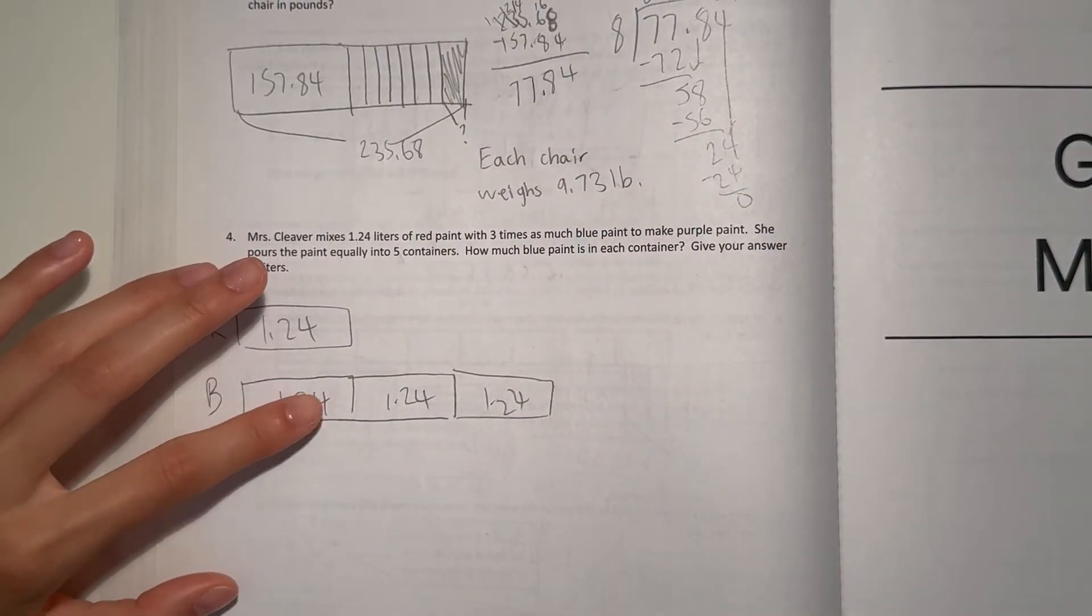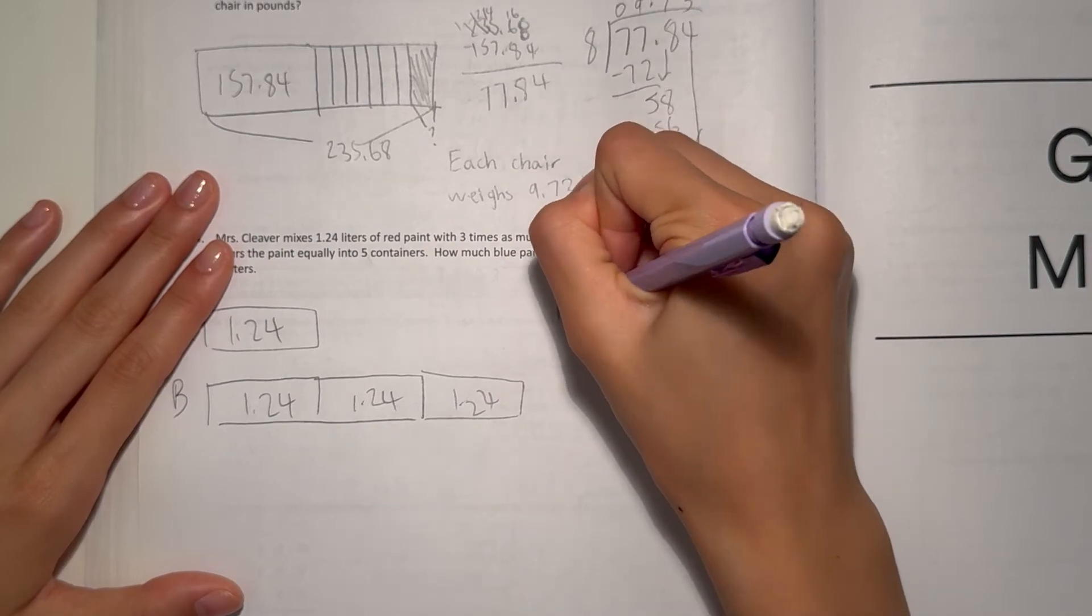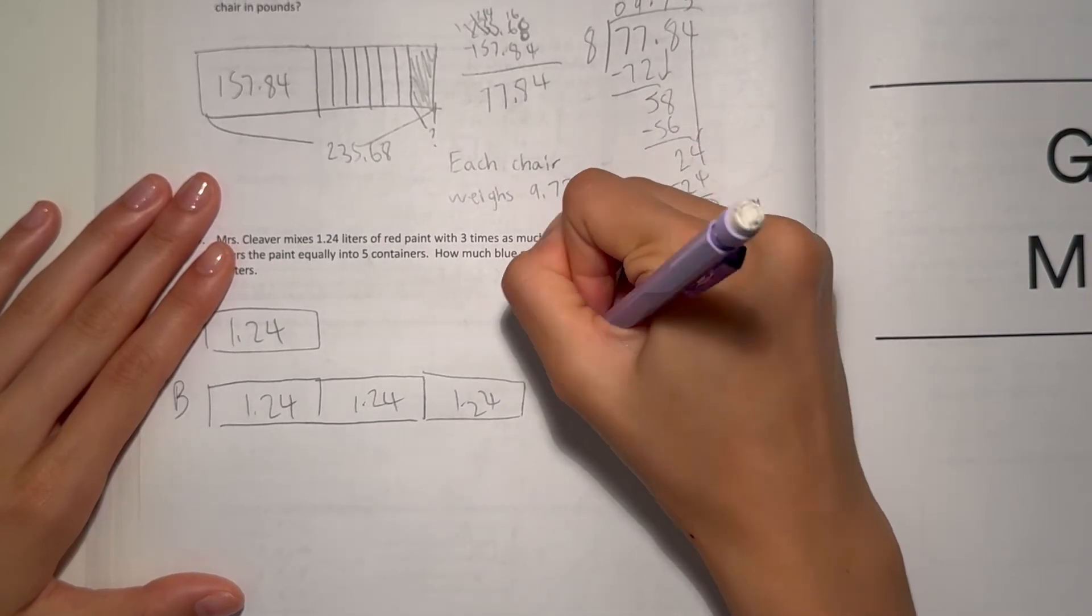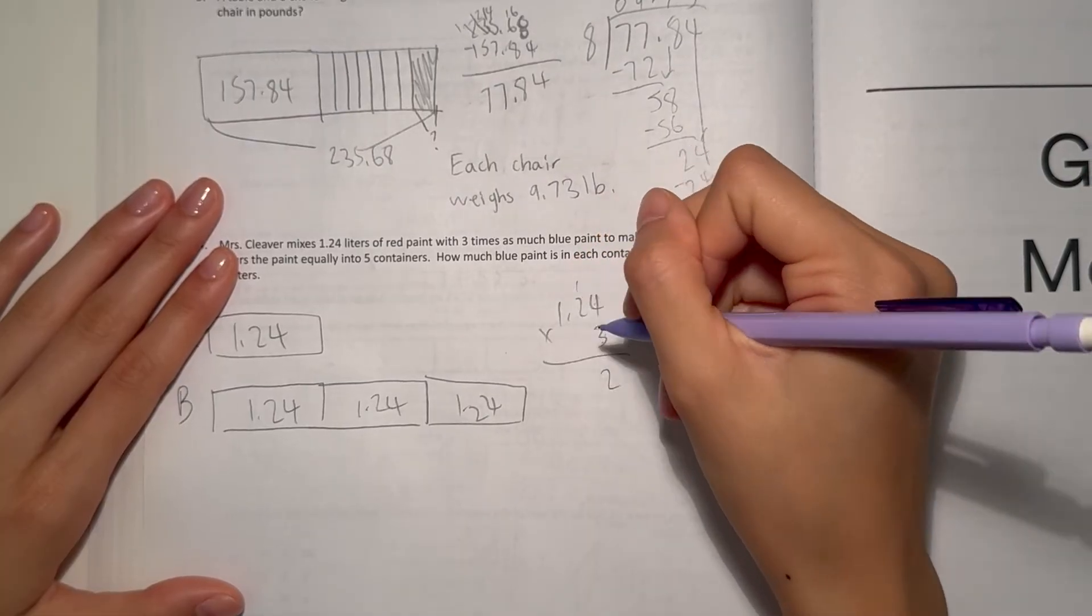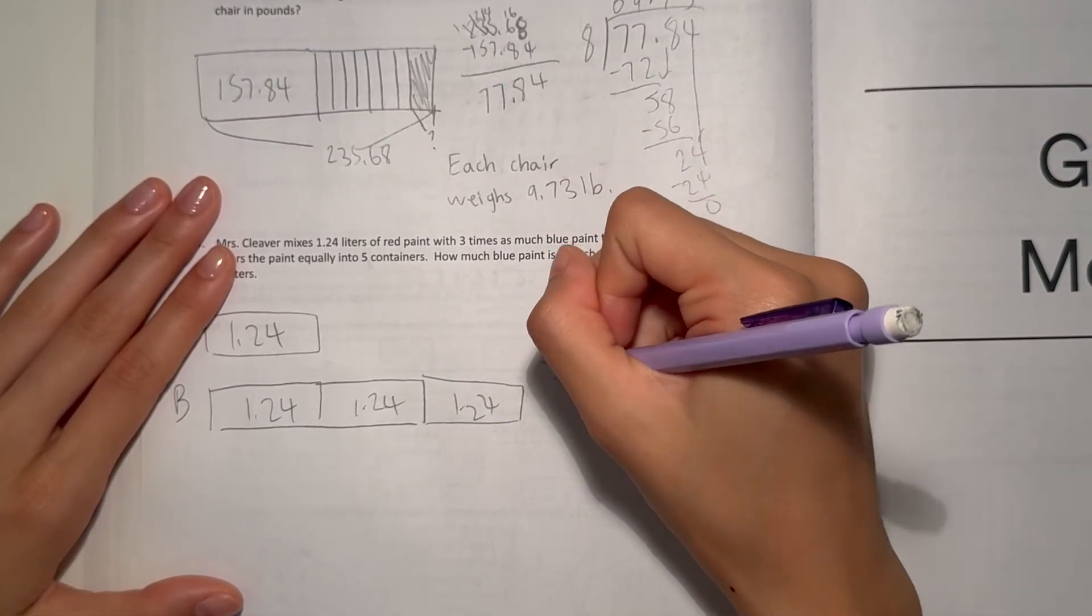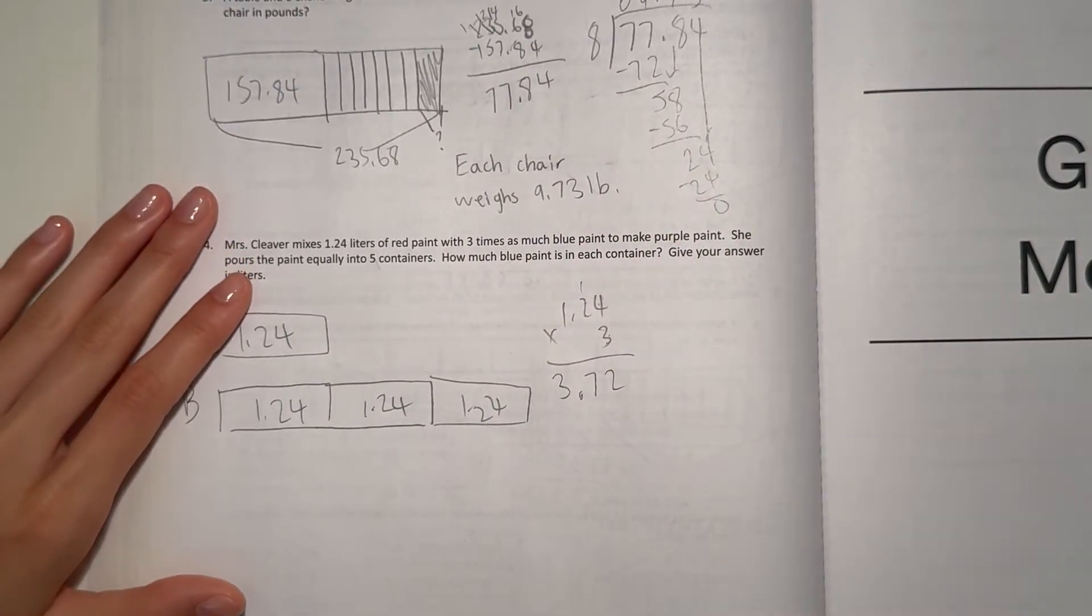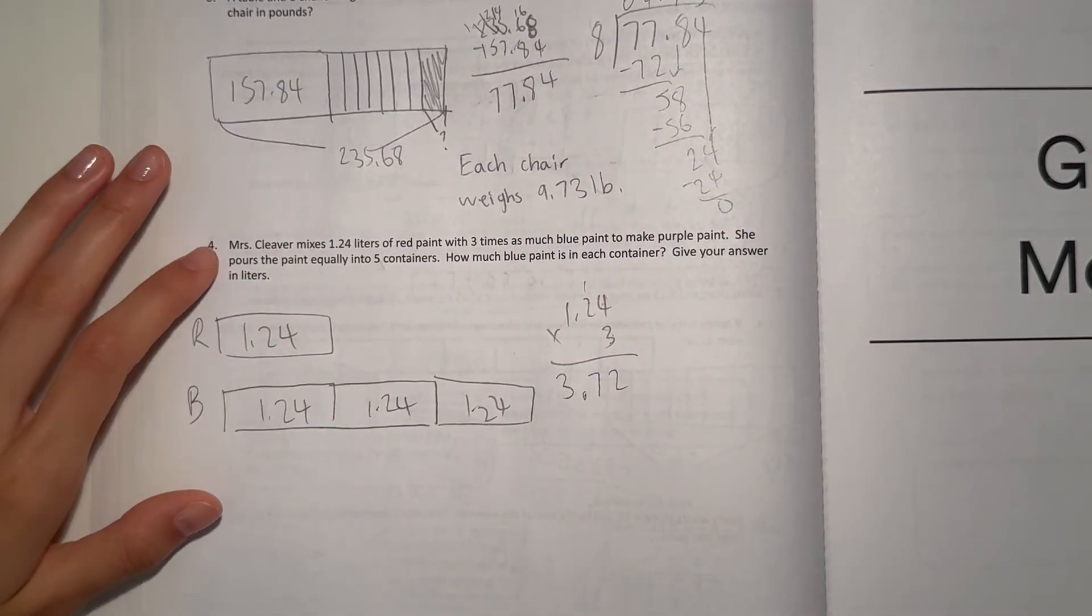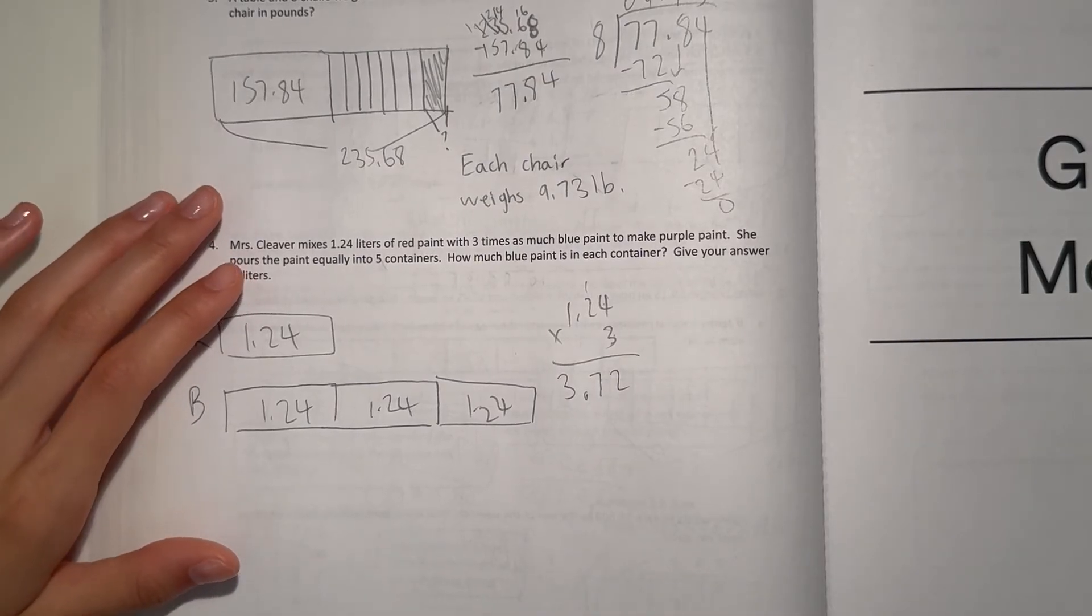Let's find out how much blue paint she uses in all. So 1.24 times 3: 4 times 3 is 12, 2 times 3 is 6 plus 1 is 7, and 1 times 3 is 3. So her answer is 3.72 liters of blue paint in all.